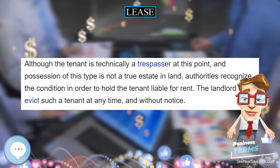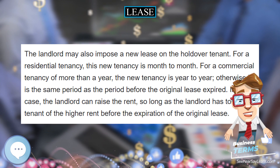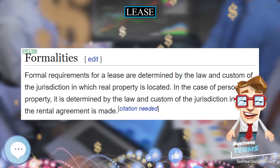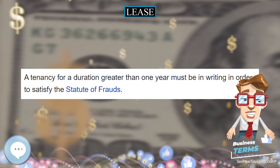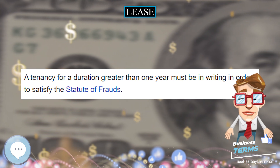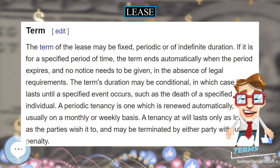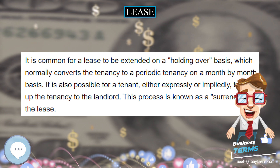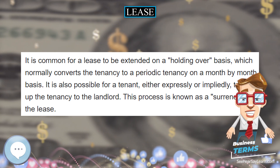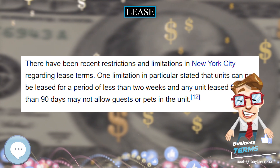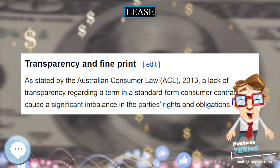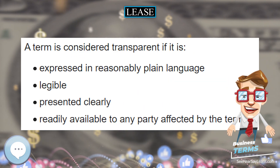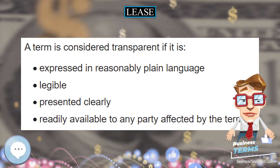Alternatively, a tenancy at will, without a specific time limit, may exist for a temporary period where a tenant wishes to take possession of a property and the landlord agrees, but there is insufficient time in which to negotiate and complete a new lease. In this case, the tenancy at will is terminated as soon as a new lease is negotiated and signed. The parties may also agree that if they fail to enter into a new lease within a reasonable time period, then the tenant must vacate the premises. If a lease exists at the sole discretion of the landlord, the law of the jurisdiction may imply that the tenant is granted, by operation of law, a reciprocal right to terminate the lease at will.